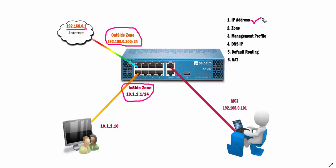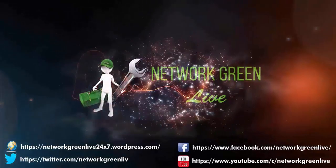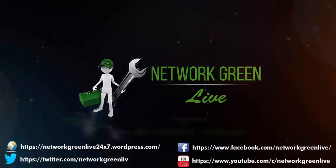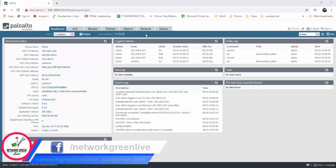We will set the IP. Second, we will create the zone. Next, we will create the management profile. Next, we will set the DNS IP. Next, we will create the default routing. Next, we will create the NAT. Next, we will create the management IP.